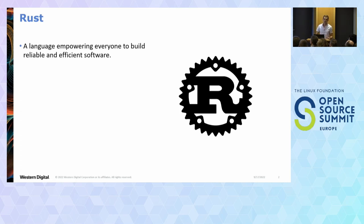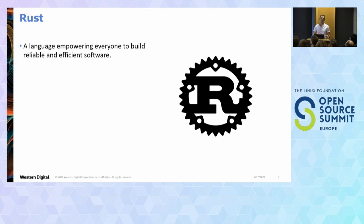Rust is a systems language, similar to C in that regard. There's no garbage collector, there's no virtual machine — it's all compiled down to bare assembly. It provides memory and thread safety, and that's probably the thing you hear the most: that it's a safe language, and that's all done at compile time. It's extremely powerful, has great performance, and it's slowly being introduced into open source projects.